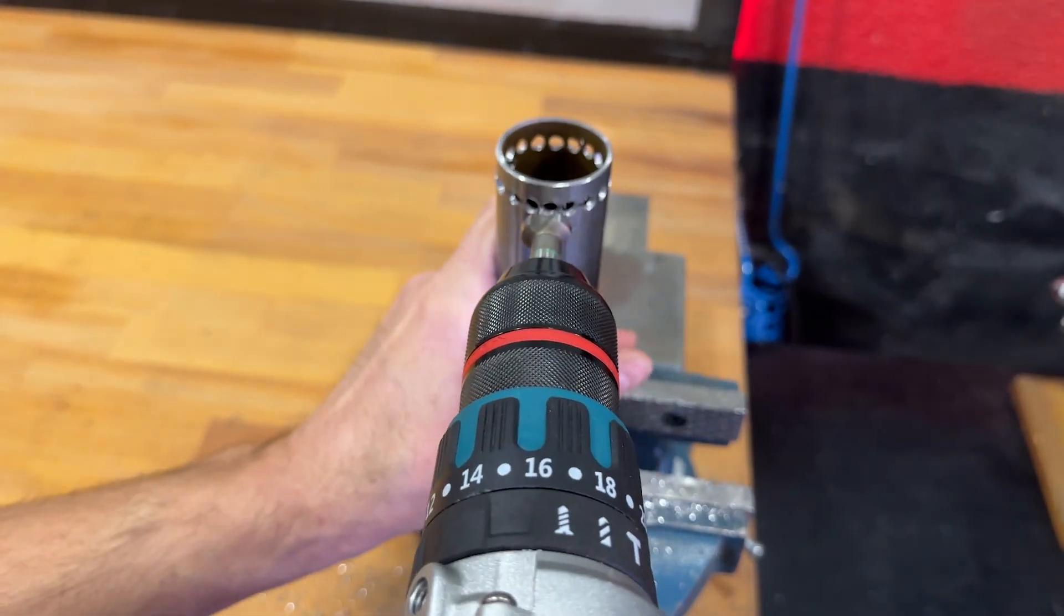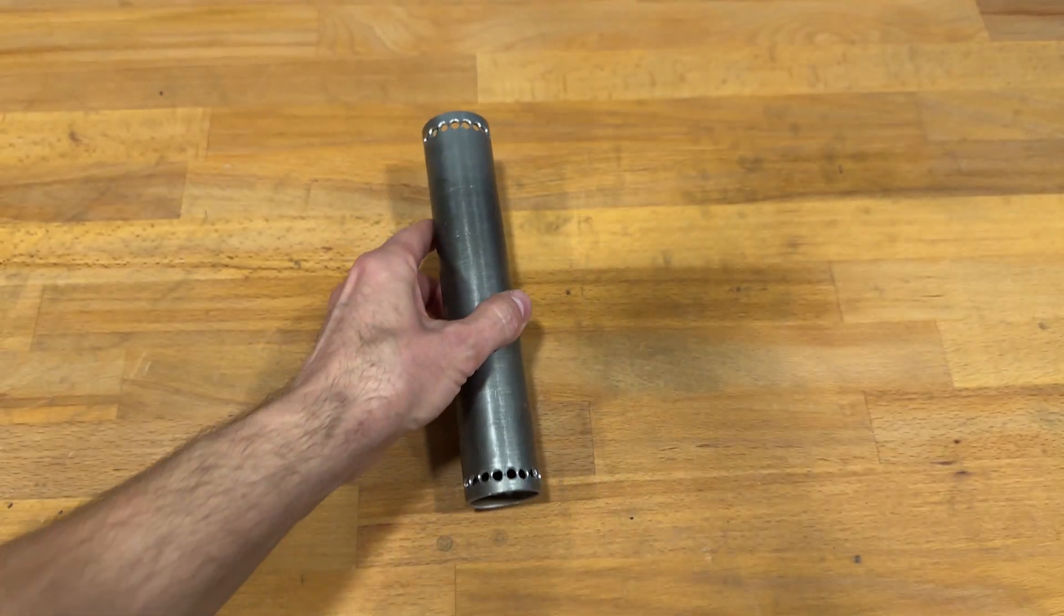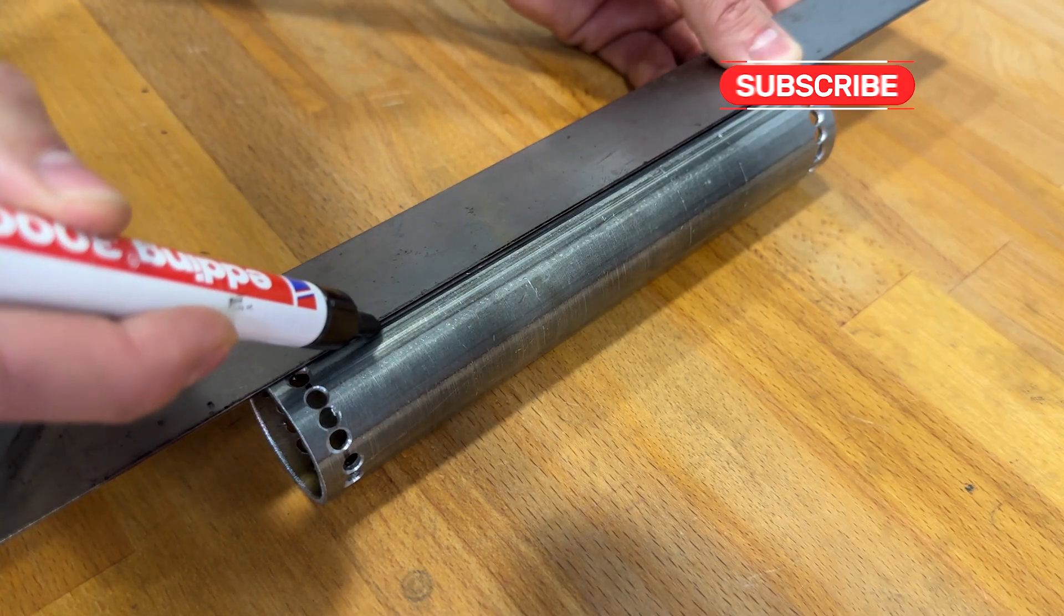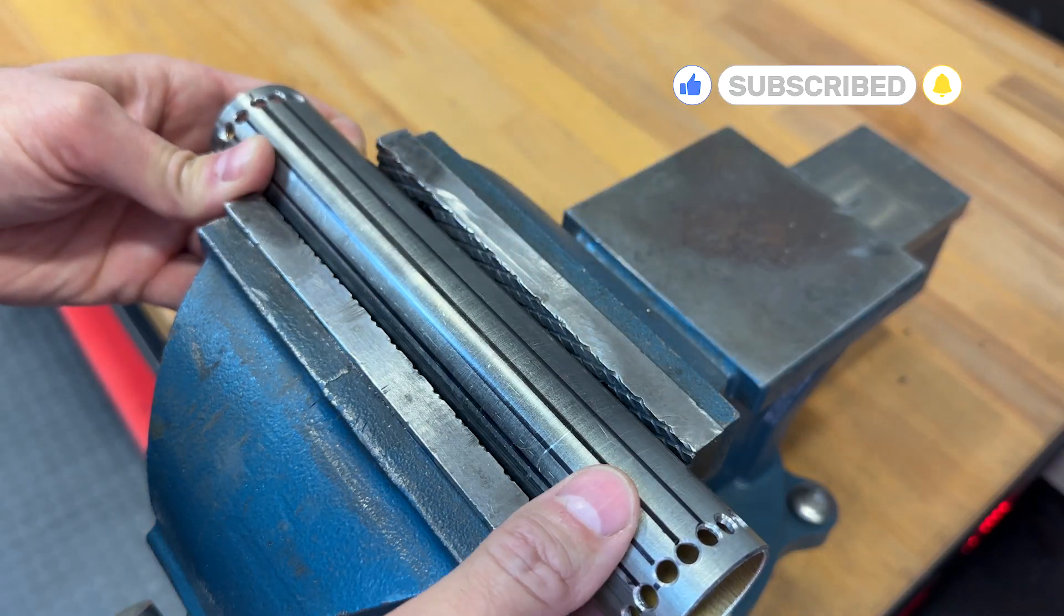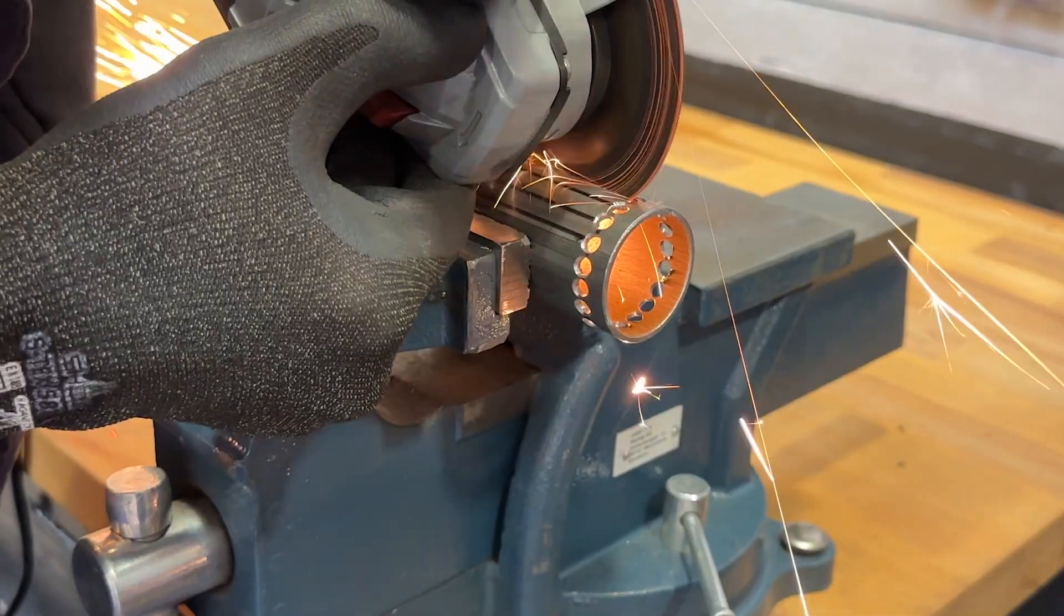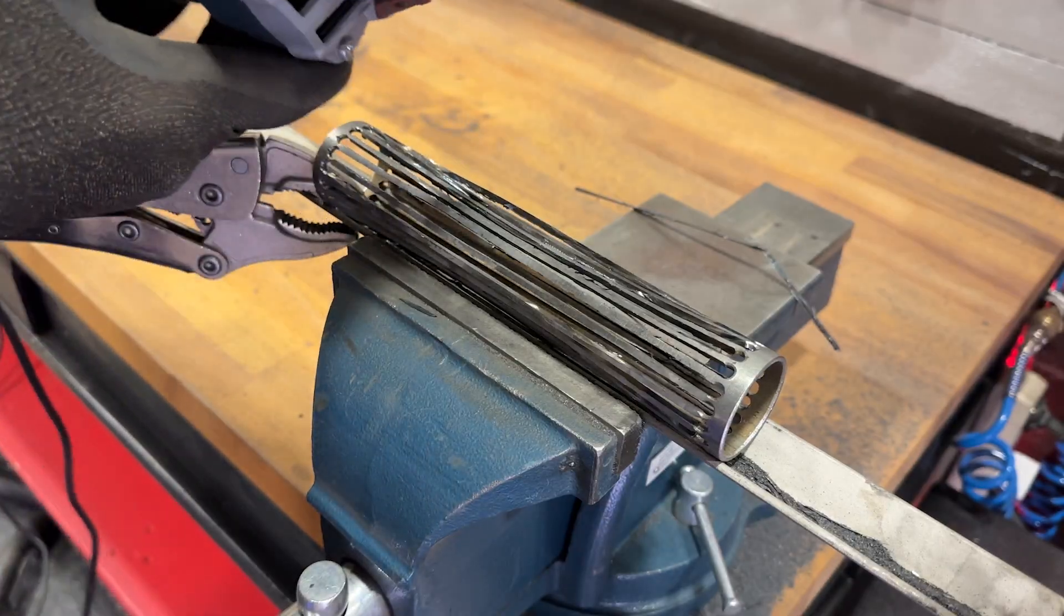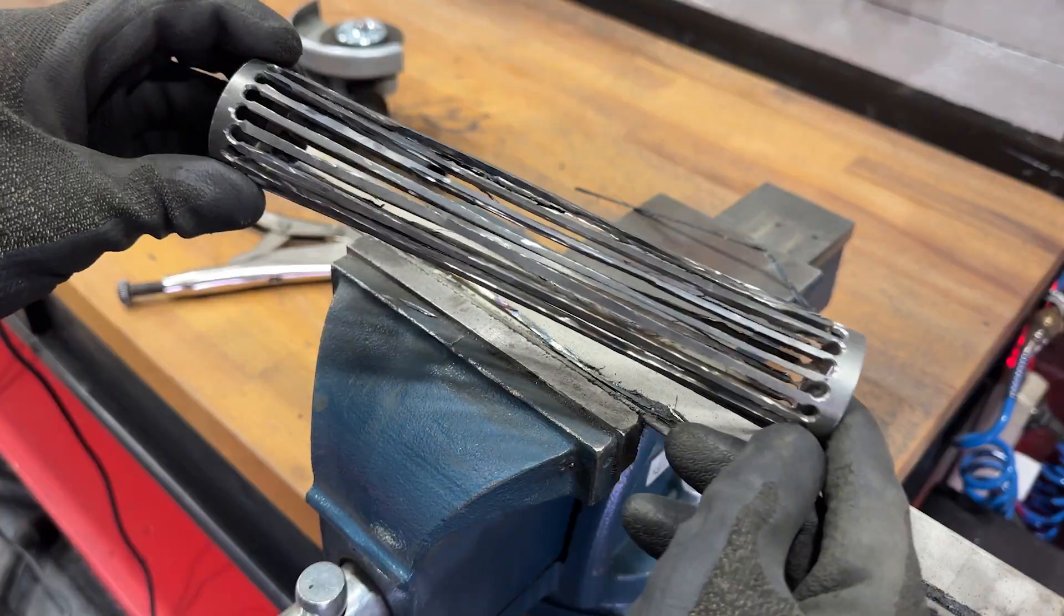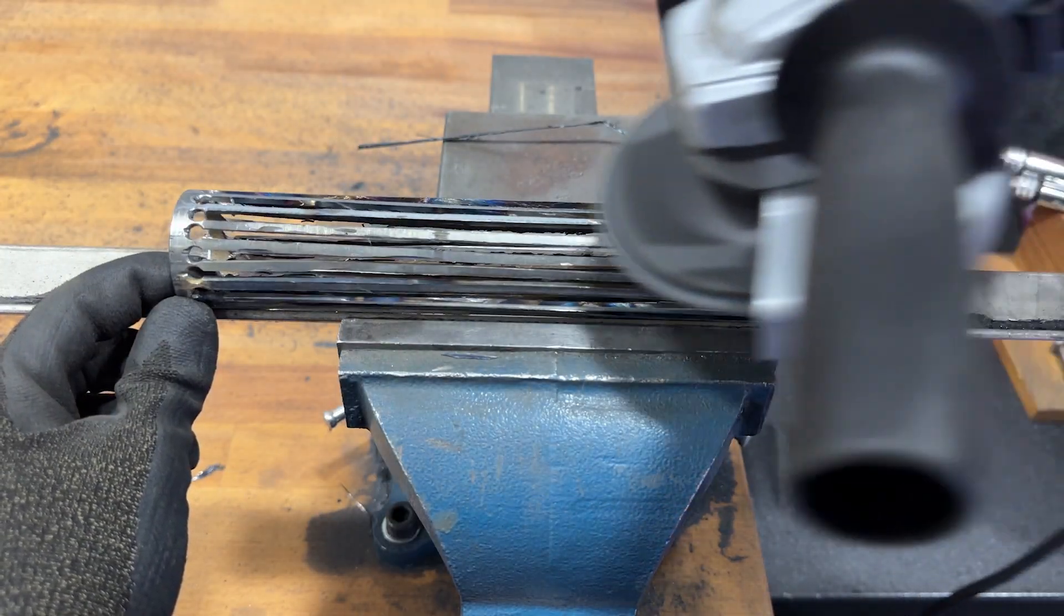Using a countersink, we clean the burrs from the holes. Now we need to draw a line connecting each hole at one end with the opposite hole at the other end. We continue making a groove on each line that joins the two holes. To do this, we'll use a grinder with a cutting disc. This is the most delicate process in the entire manufacturing and requires great skill in handling the angle grinder. Using a sanding disc, we remove all burrs.